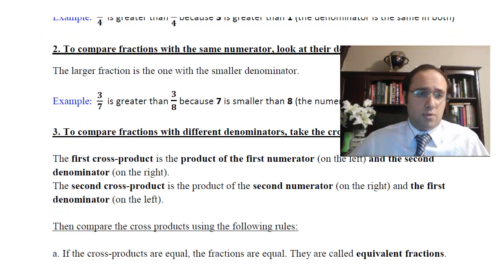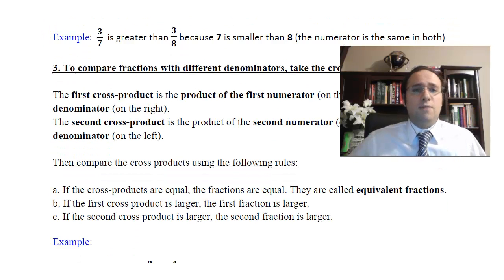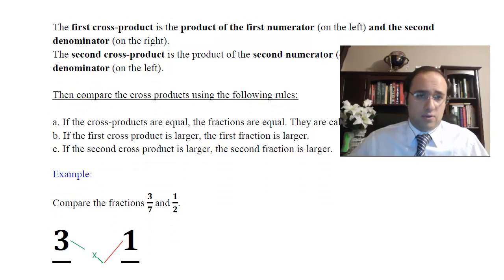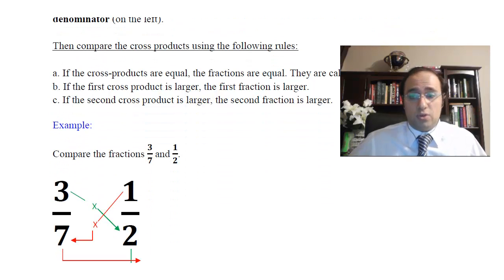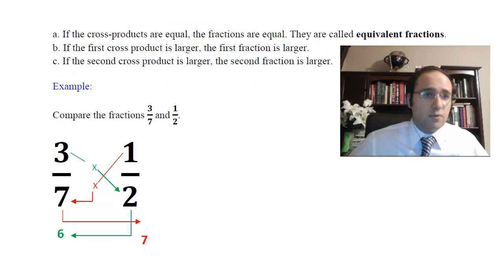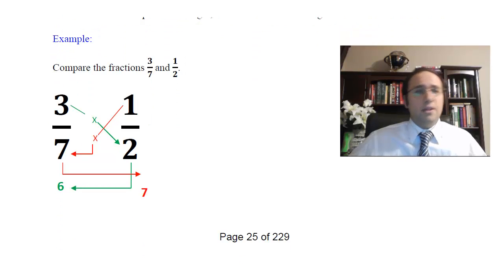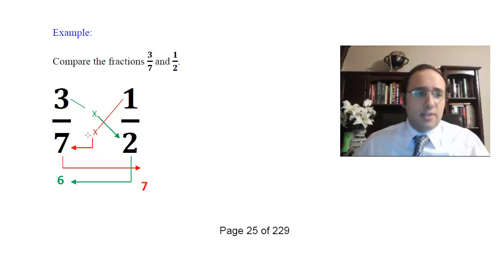Let's go to number three right now. How can I compare fractions that have different denominators and different numerators as well? The denominators are different and the numerators are different. Let's take an example right away. Let's say we have a number like this, 3 over 7 and 1 over 2. Here are the two fractions that we have.